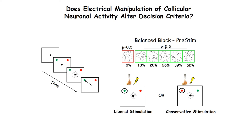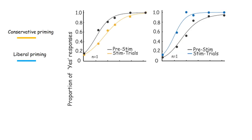This manipulation changed the proportions of monkeys' yes-no decisions in the same way that the previous behavioral experiments changed decisions.